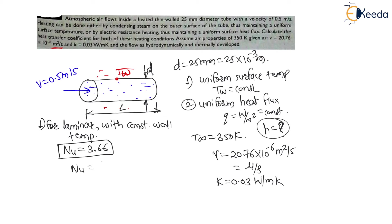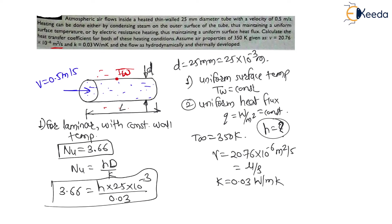The Nusselt number formula is Nu = h·D/K, where D is the characteristic dimension (diameter) for flow through a pipe. So 3.66 = h × (25 × 10⁻³) / 0.03. Solving for h gives h = 4.39 W/m²·K. This is the convective heat transfer coefficient for laminar fully developed flow with constant wall temperature.